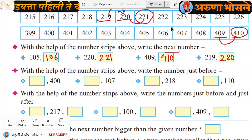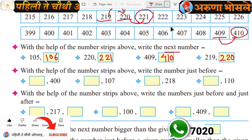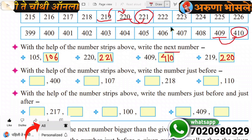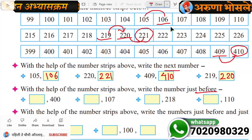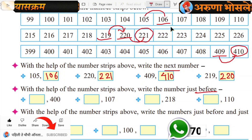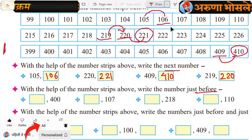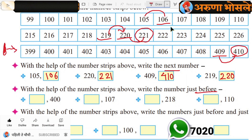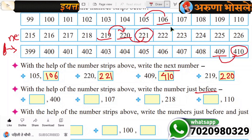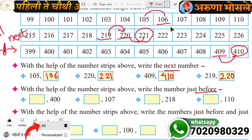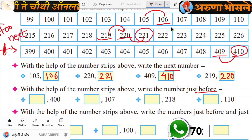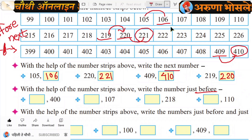Write the number just before 410. Before number — find out. Before means the number that comes before. The number to the right means the next number, which is the after number. And the number to the left means the before number. Which number? Before number — the number that comes before. Understand? Very good.